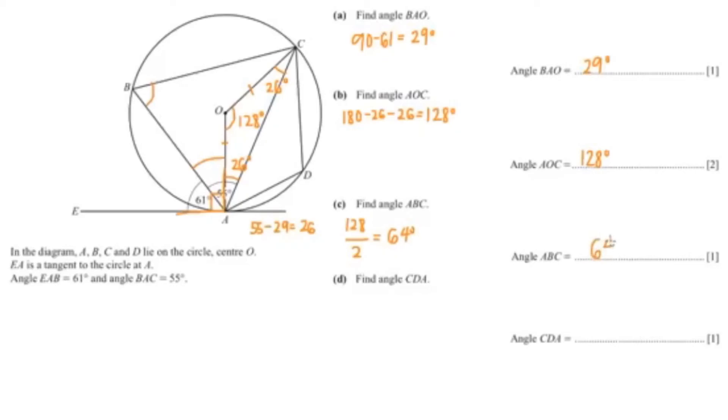So our angle ABC is 64. Now our last question wants us to find angle CDA.